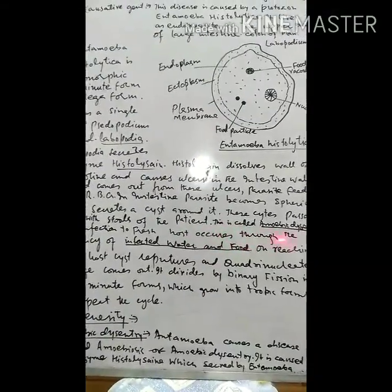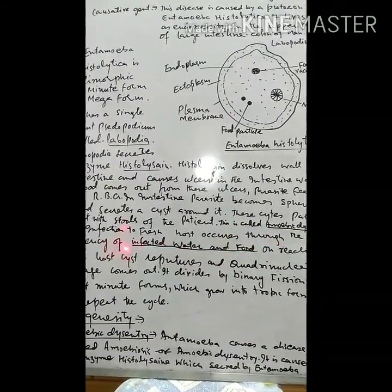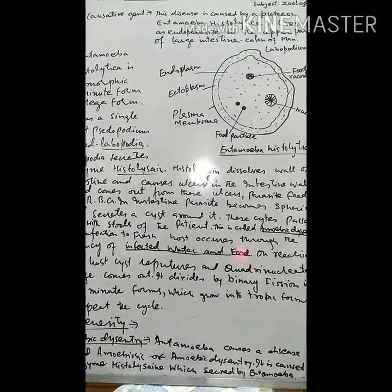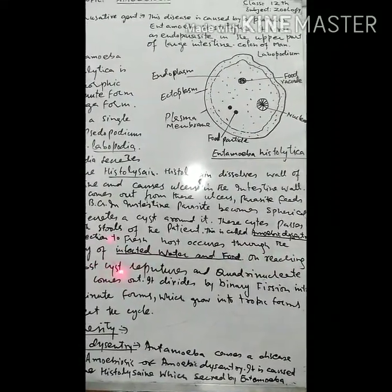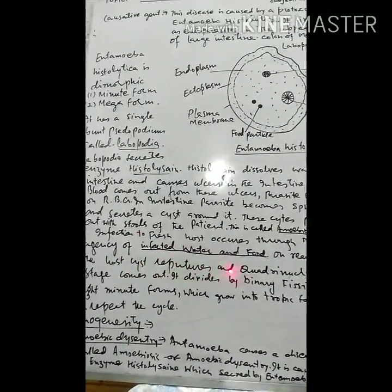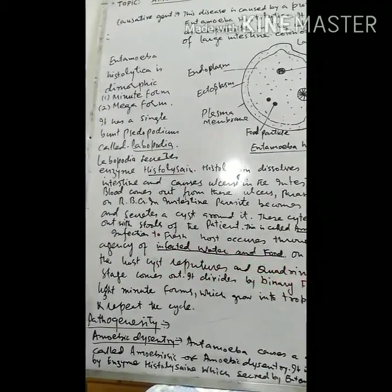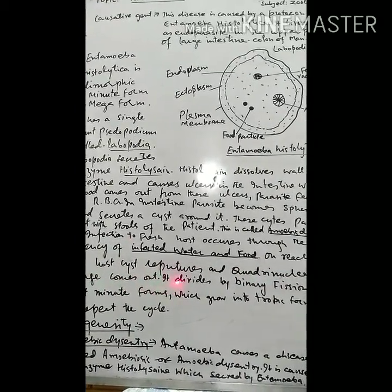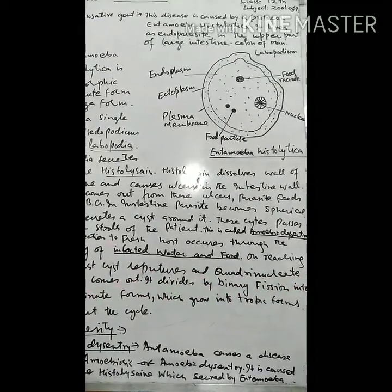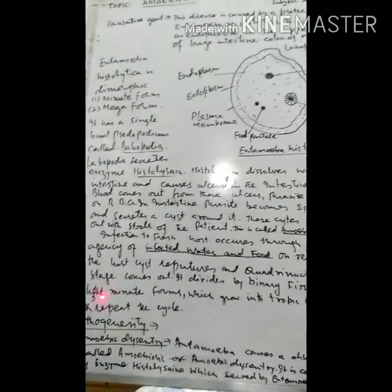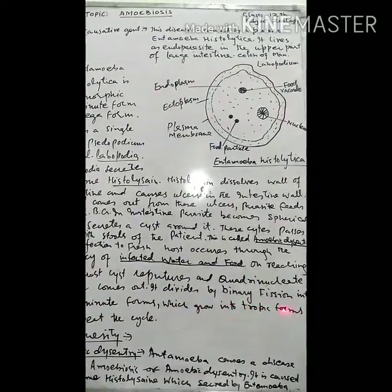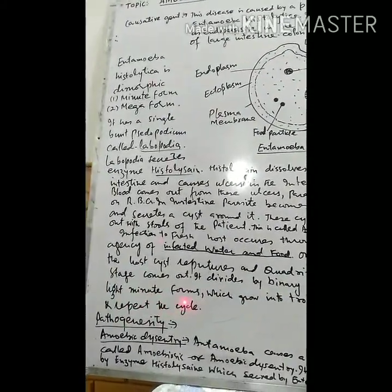Infection to a fresh host occurs through infected water and food. On reaching the host, the cyst ruptures and a quadrinucleate stage comes out. It divides by binary fission into eight minute forms, which grow into trophic forms and repeat the cycle.